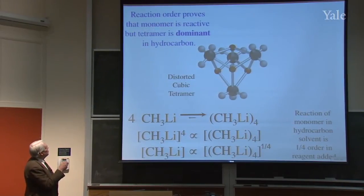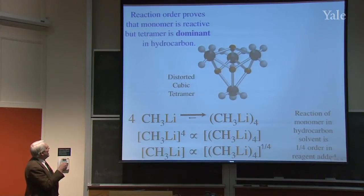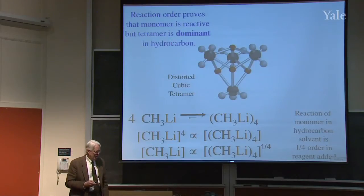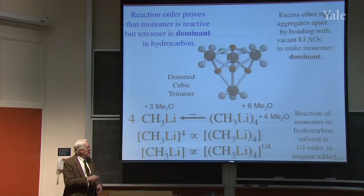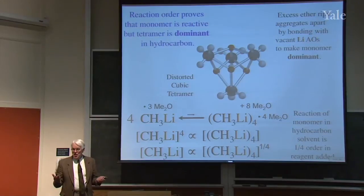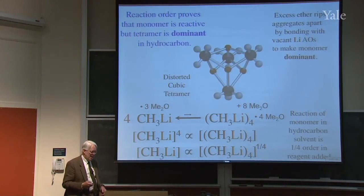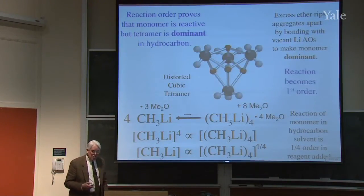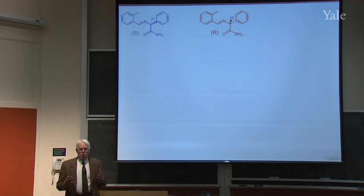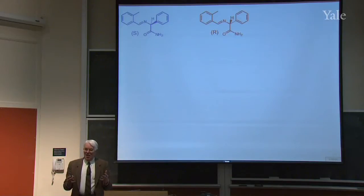The reaction order proves that the monomer is reactive but the tetramer is dominant in the hydrocarbon. But if you have excess ether, the equilibrium shifts and the reaction becomes first order — if you add 16 times as much stuff, you increase the concentration of the monomer by a factor of 16. So that's one example of a weird kinetic rate law — a fractional dependence on concentration.